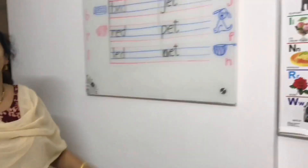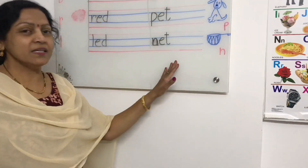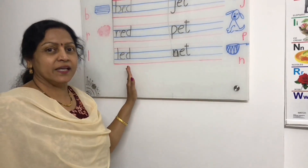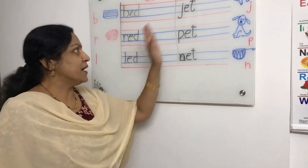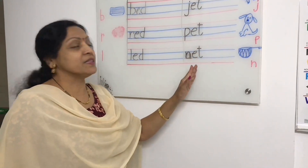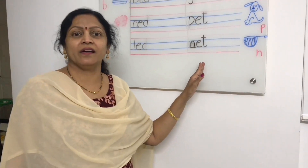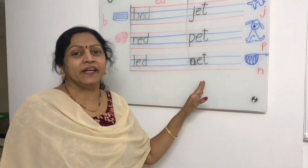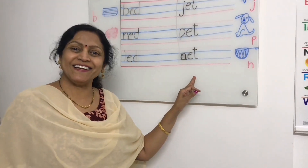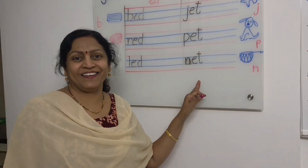Okay, children? All of you write these three letter words — these ED words and these ET words — neatly in your notebooks. Okay, children? Bye, bye!